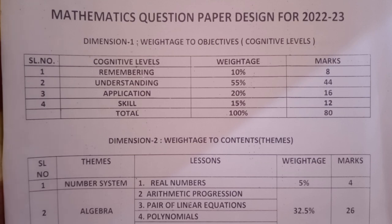Dimension one has different levels of questions. Remembering level has 8 marks, understanding level has 44 marks, application has 16 marks, and skill level has 12 marks.